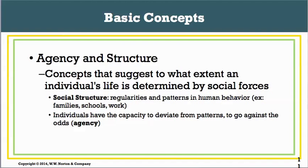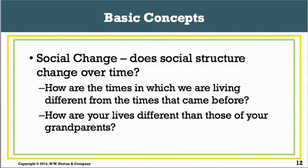However, individuals have the capacity to deviate from patterns — to go against the odds. This is called agency, or human choice. Not all of us are going to marry and have kids; some might decide to stay single, some of us are going to be travelers. Humans have this capability of going against the social structure and creating their own choices.